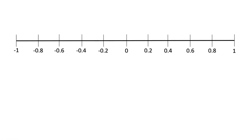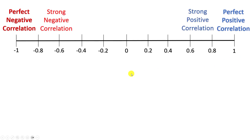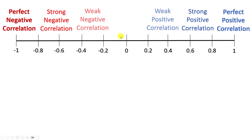You could also visualize the correlation coefficient on a number line. At the extremes we have perfect correlation at r = −1 or r = 1. As you move closer to 0, the correlation gets weaker, until at 0 we would say there is no correlation whatsoever.